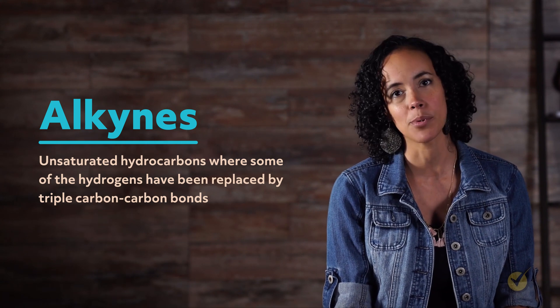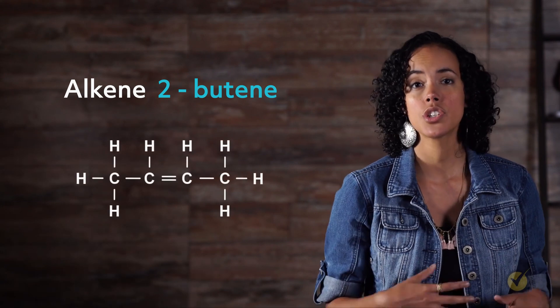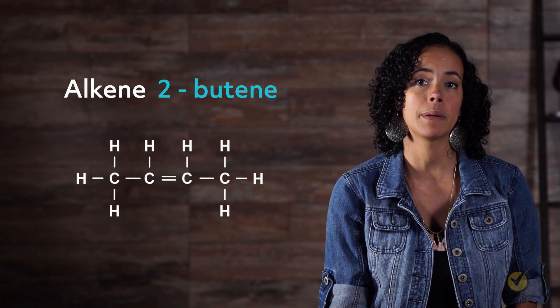Let's look at a simple example, starting with the alkene 2-butene and converting it to the alkyne 2-butyne. In 2-butene, two of the hydrogens of butane have already been replaced by a carbon-carbon pi bond.